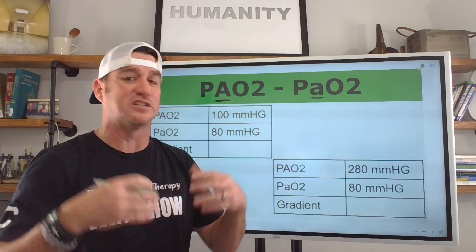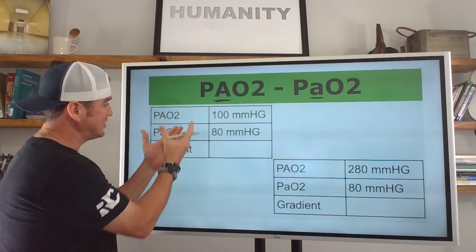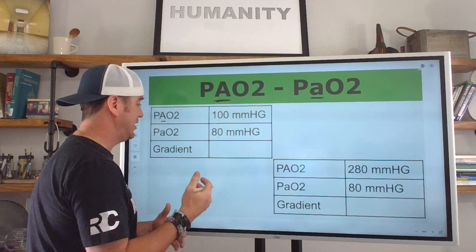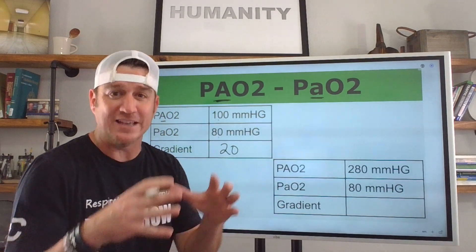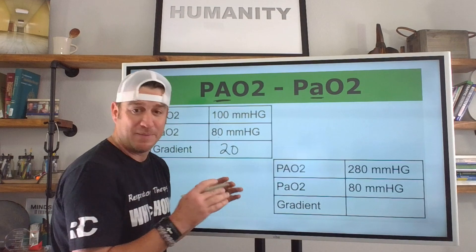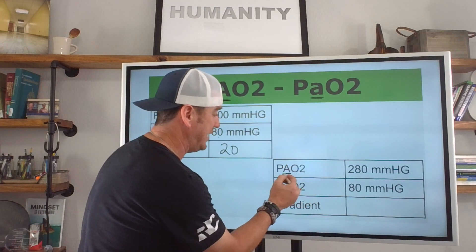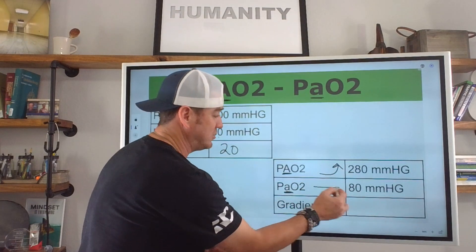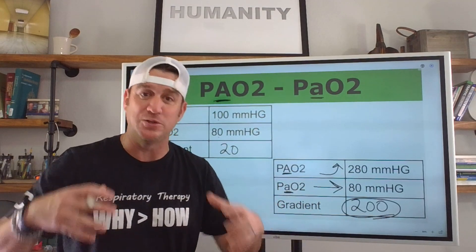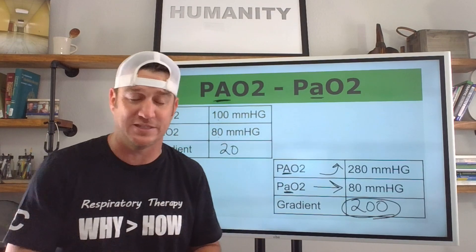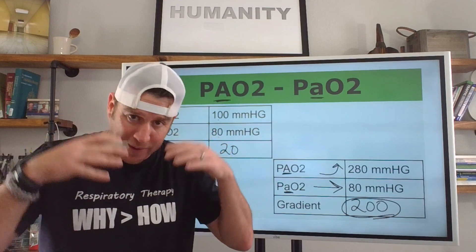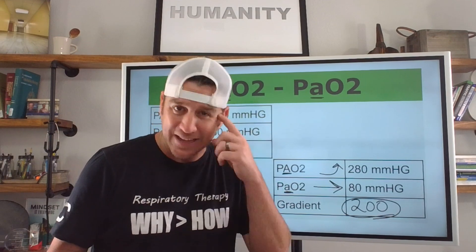The first gradient is the alveolar oxygen (PAO2) versus arterial oxygen — the amount of oxygen that moves from the alveoli into arterial blood. Normally, alveolar PAO2 is about 100 and arterial is around 80–100, so the gradient is a small number: 5, 10, 15, 20. But when we give a lot of supplemental oxygen and PAO2 goes up to 280 while arterial stays at 80, the gradient becomes 200. A big difference means oxygen is entering the alveoli but not reaching arterial blood — indicating some type of shunt process.